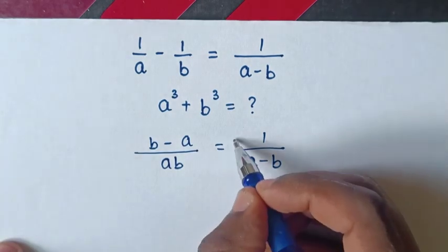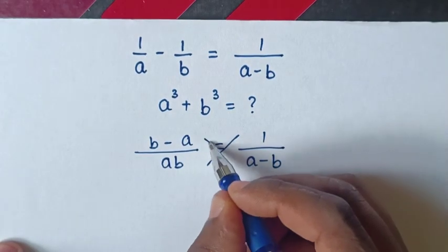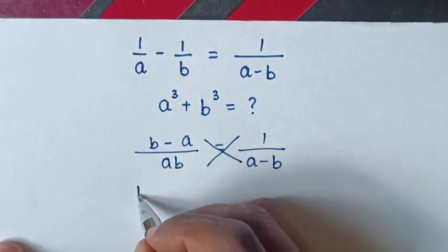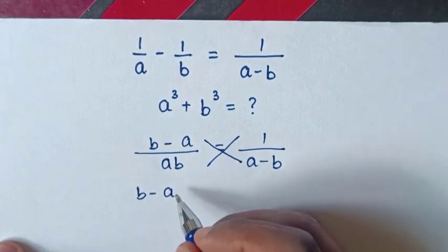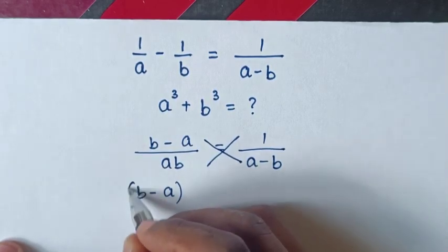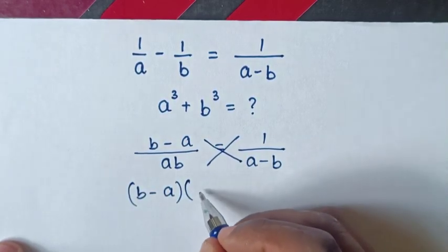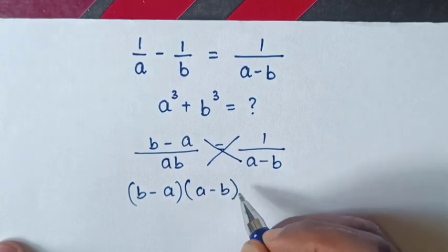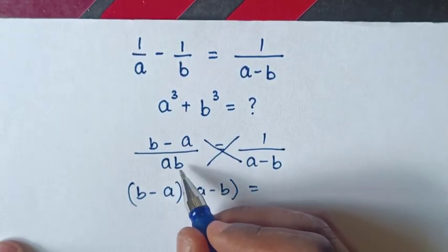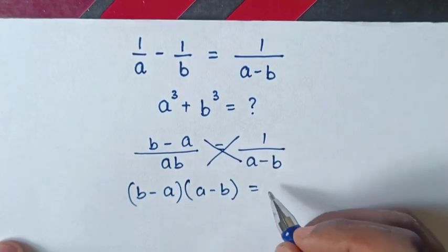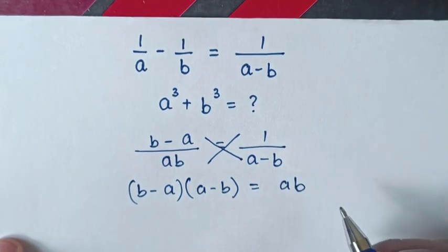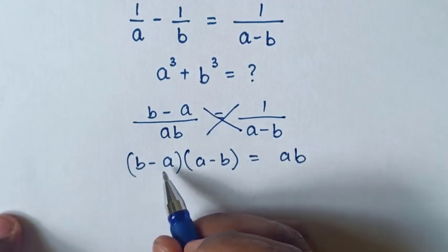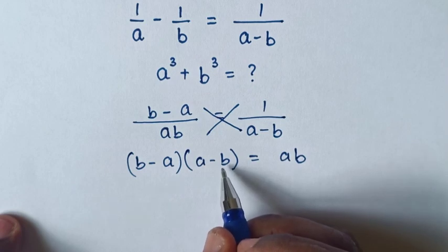Next step, we cross multiply. So here it will be b minus a, bracket times a minus b, is equal to ab times 1, which is ab.